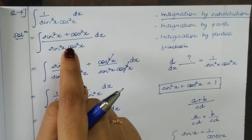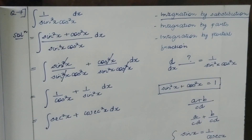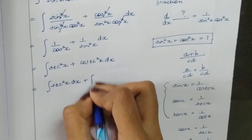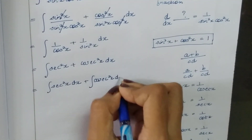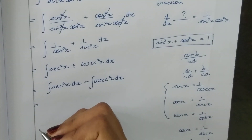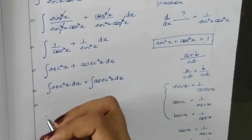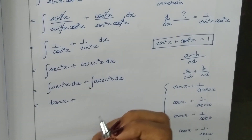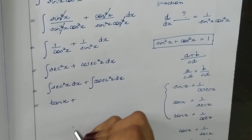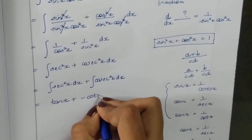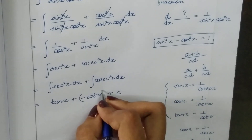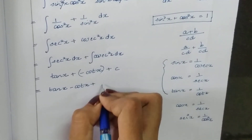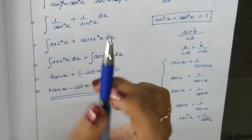Using 1 equals sin square x plus cos square x, we integrate: integral of sec square x dx plus integral of cosec square x dx. The integral of sec square x is tan x, and the integral of cosec square x is minus cot x. So the final answer is tan x minus cot x plus C.